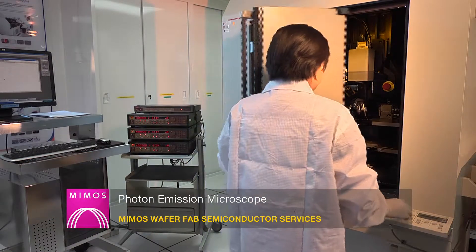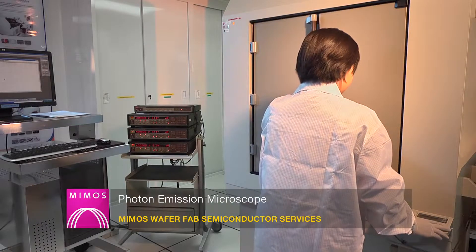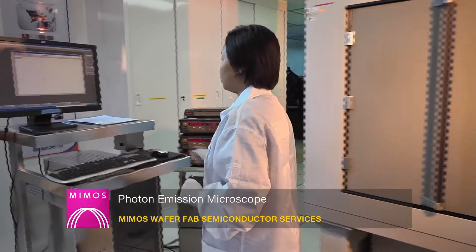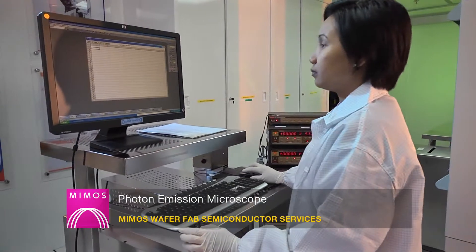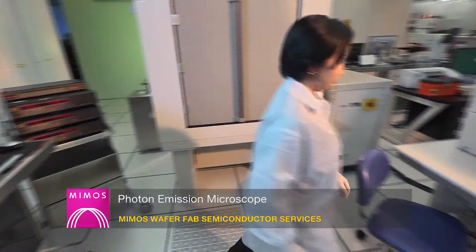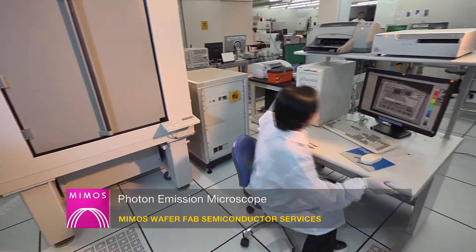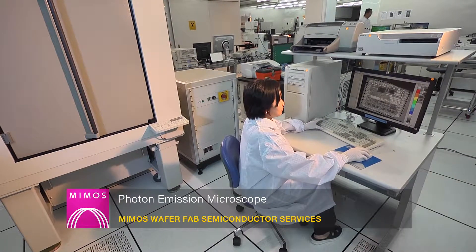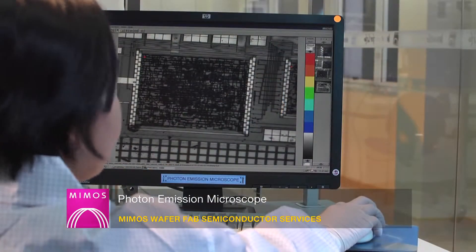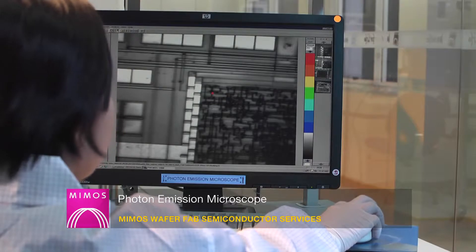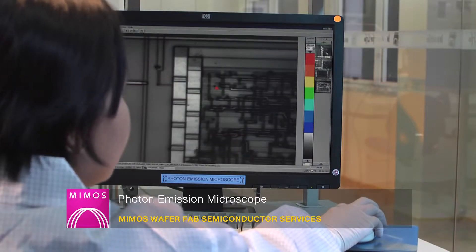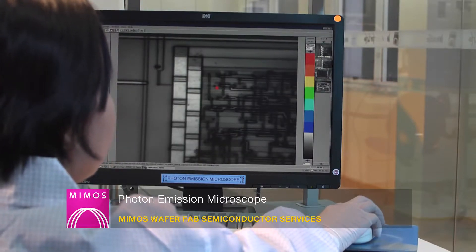Photon emission microscope uses detection of photon emission technology to localize leakage current defects at die level. Equipped with indium gallium arsenide camera, PEM is capable to locate very faint photon emissions in all ranges from the visible to the near-infrared region NIR.